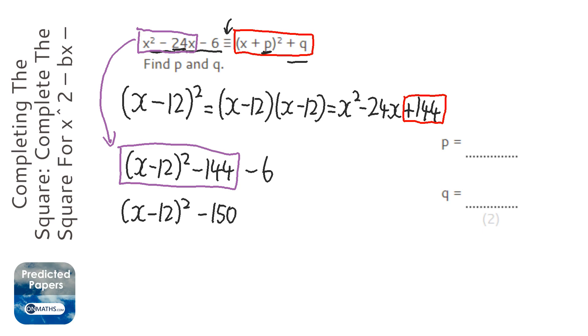So the value for p, the bit inside the bracket, is this minus 12. Be careful to put the minus on it. And the q outside the bracket, so this q here, is minus 150.